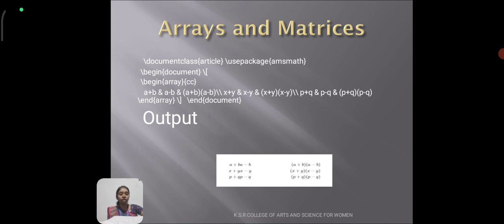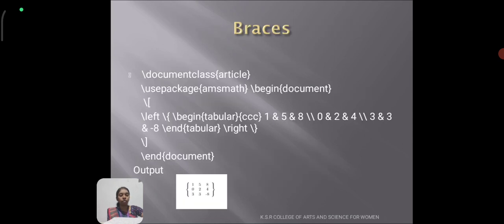For example: \documentclass{article}, \usepackage{amsmath}, \begin{document}, and \begin{array}{cc}. CC refers to center alignment. The entries are a+b and a-b, with \\ for the next line. The output becomes a+b a-b like this.